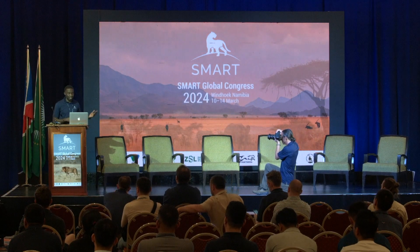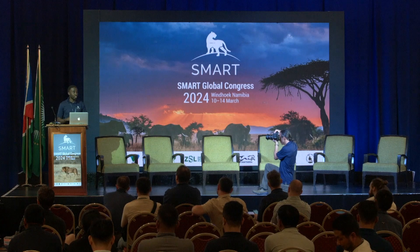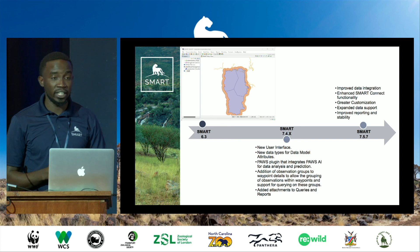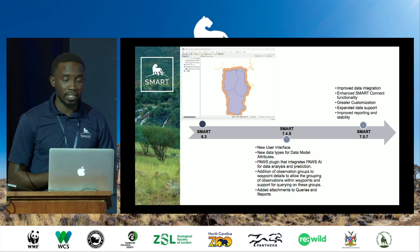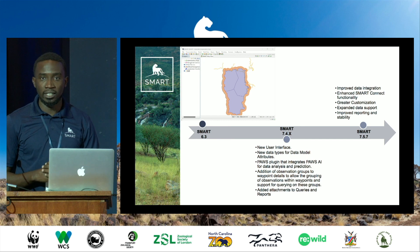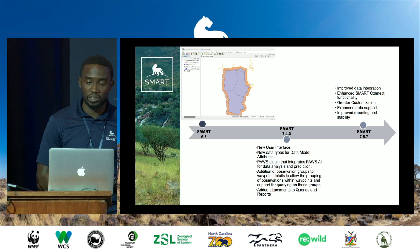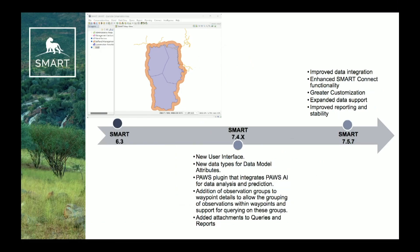Thanks, Jonathan. I think before we can appreciate where we are right now with SMART, it's a good idea to look back at where we're coming from. I have on the slide show a snapshot of SMART 6.3. We can agree that the jump from SMART 6 to SMART 7 came with a lot of functionalities, including a new user interface which makes it more accessible. We added data types for the data model, multi-select list, and a POST plugin that integrates with POSE AI for data analysis and prediction. We also added attachments to queries and improved reporting.